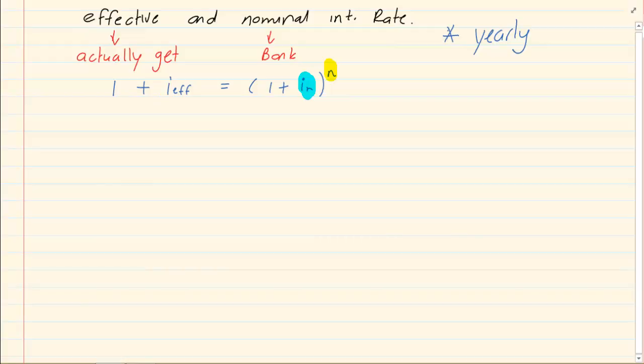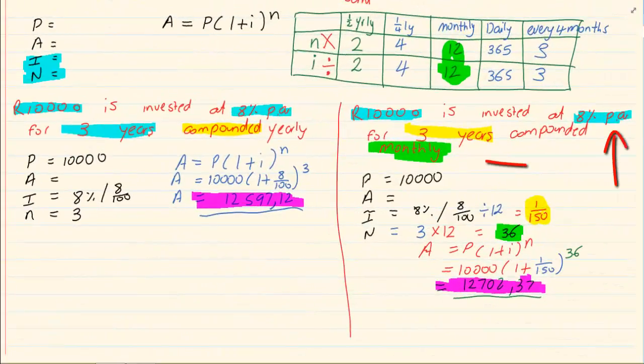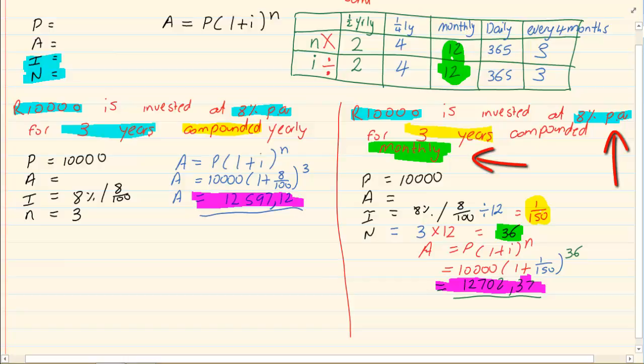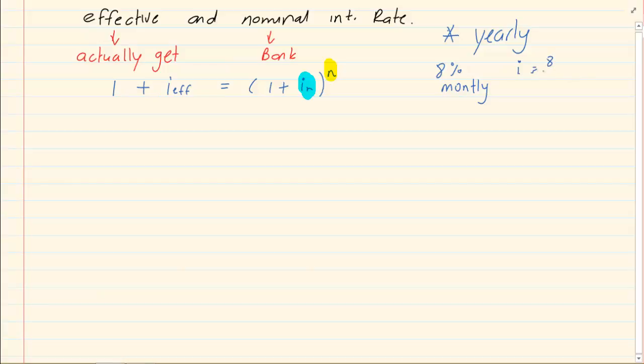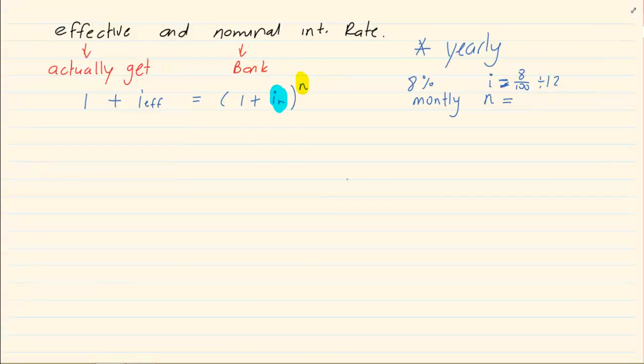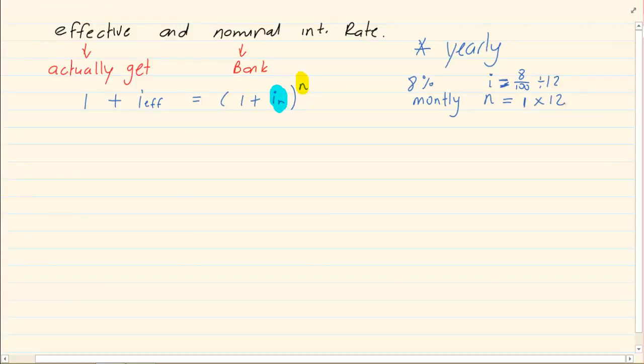So if they tell you I invested the money for 3 years, it doesn't matter. You are only interested in the interest rate for 1 year. Now when they gave us this interest rate in the previous video, we had worked at 8% monthly. So we worked at 8% and we worked on it monthly. Now what does that mean?